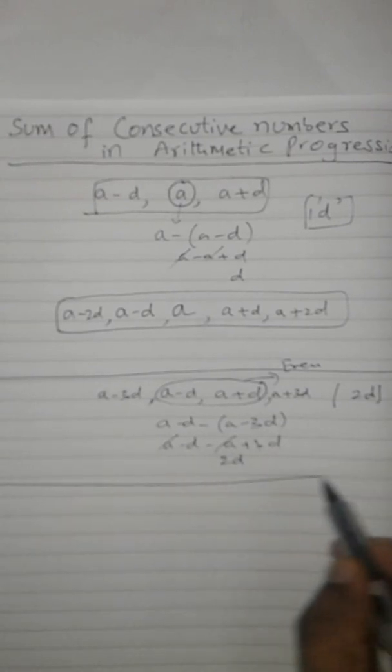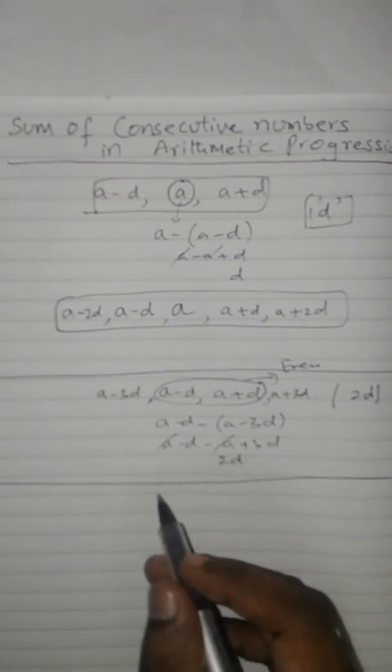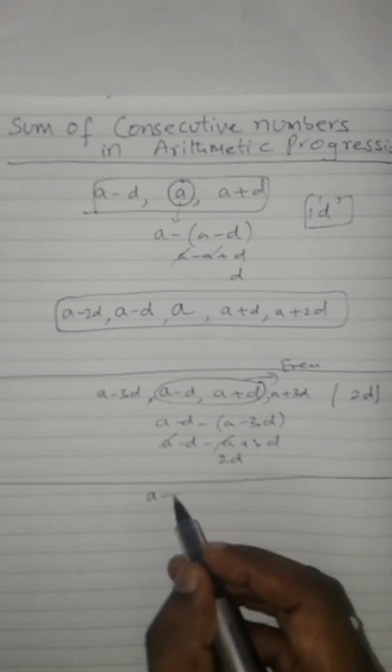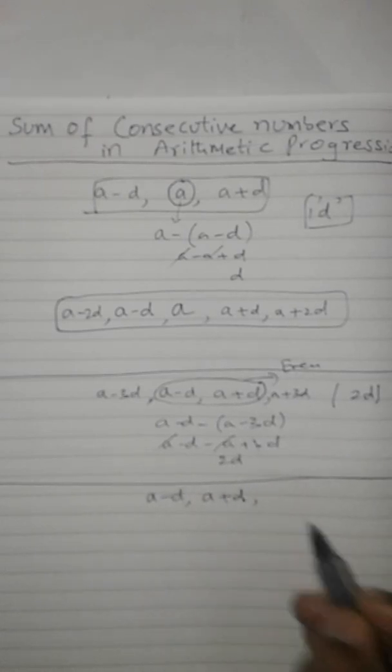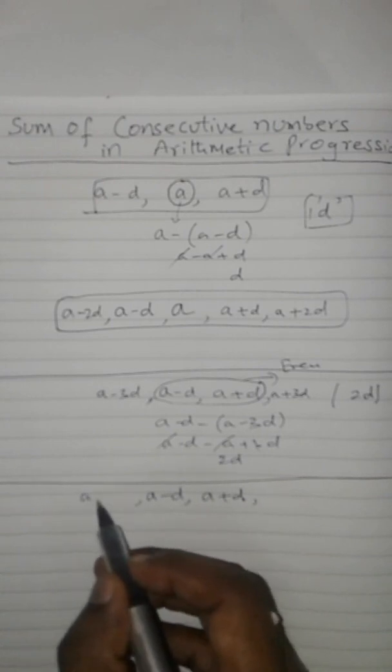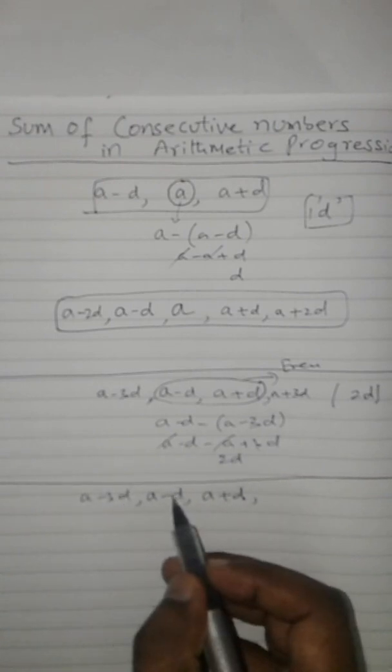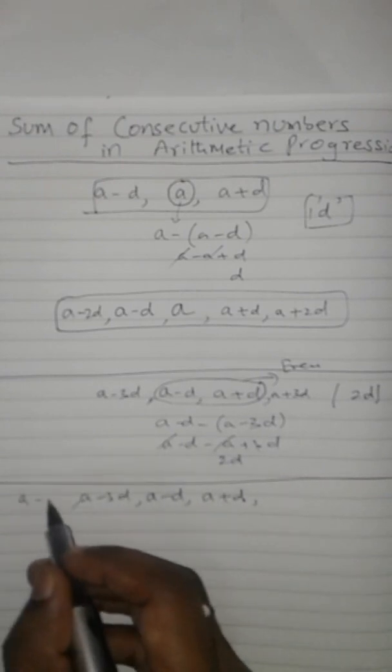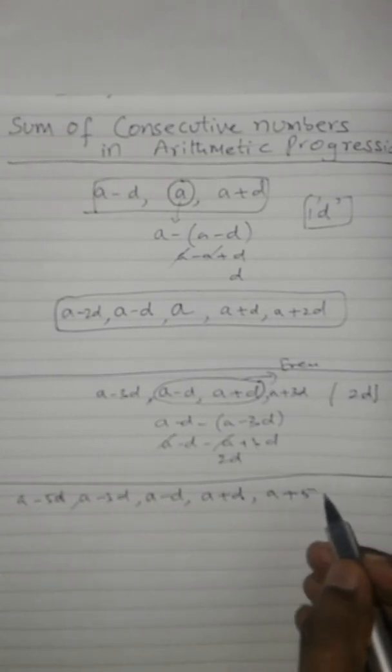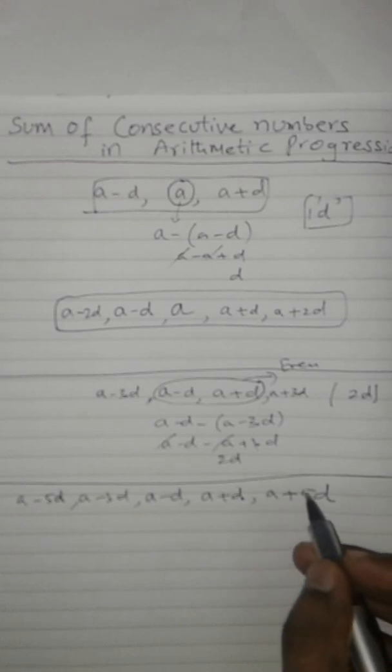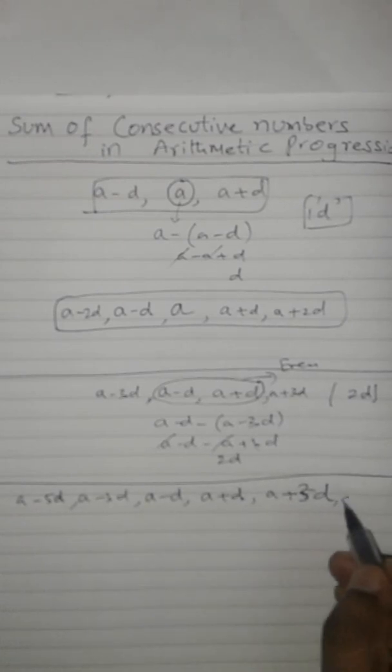Similarly, if they ask you to prepare six terms of AP, since six is even, a minus d and a plus d should be in the middle, followed by a minus 3d. Since our difference is 2d, it would be a minus 5d, then a plus 3d and a plus 5d.